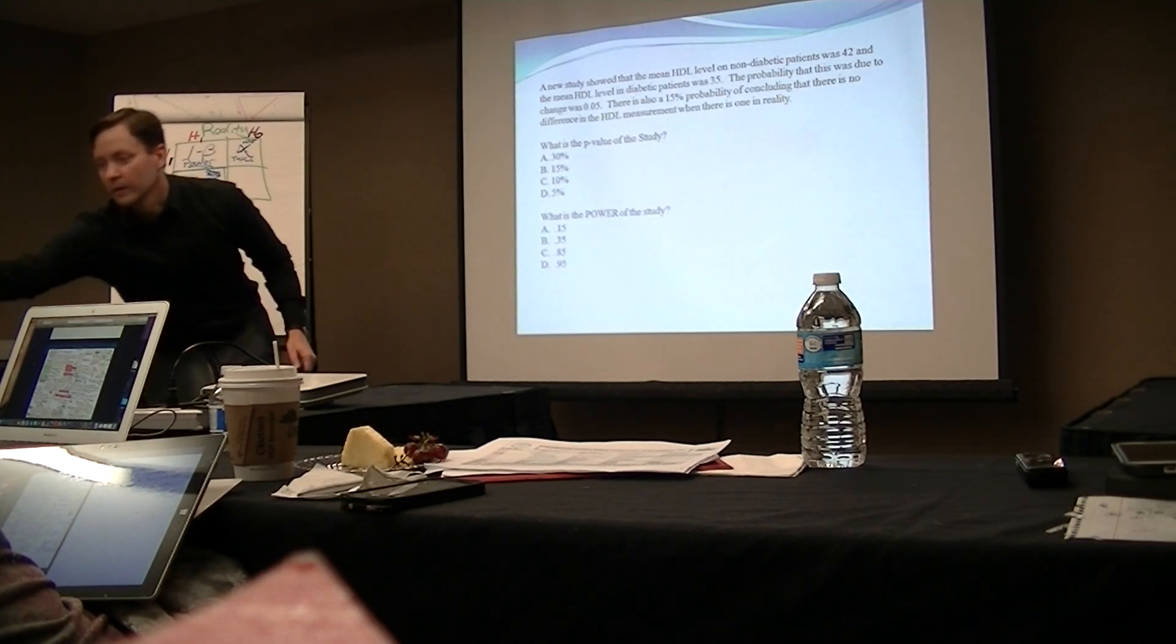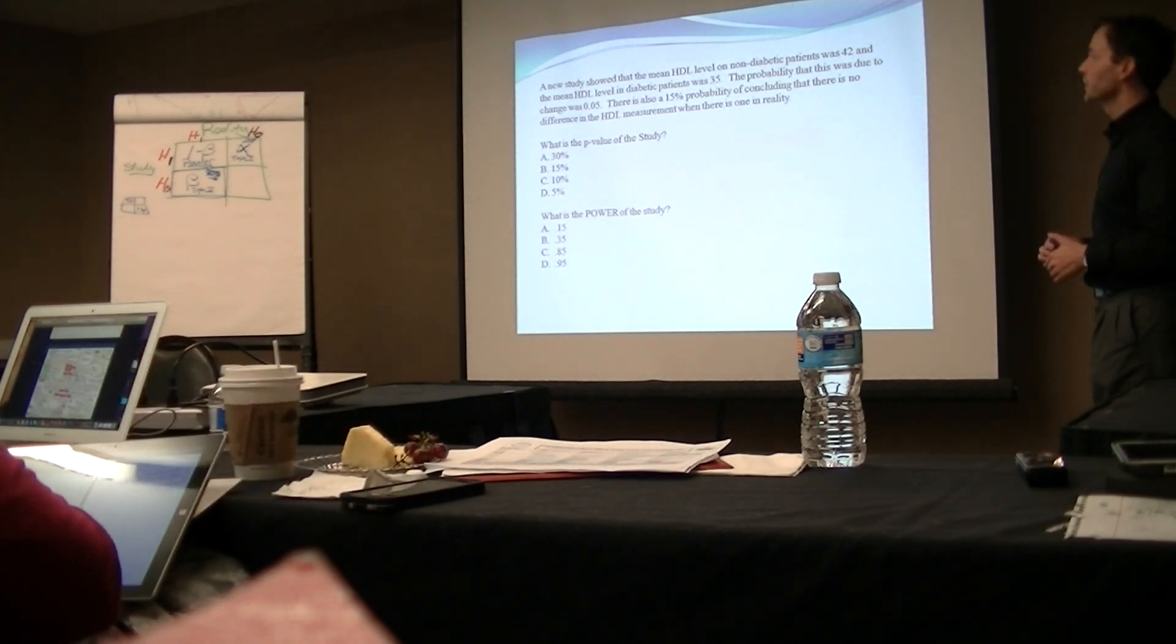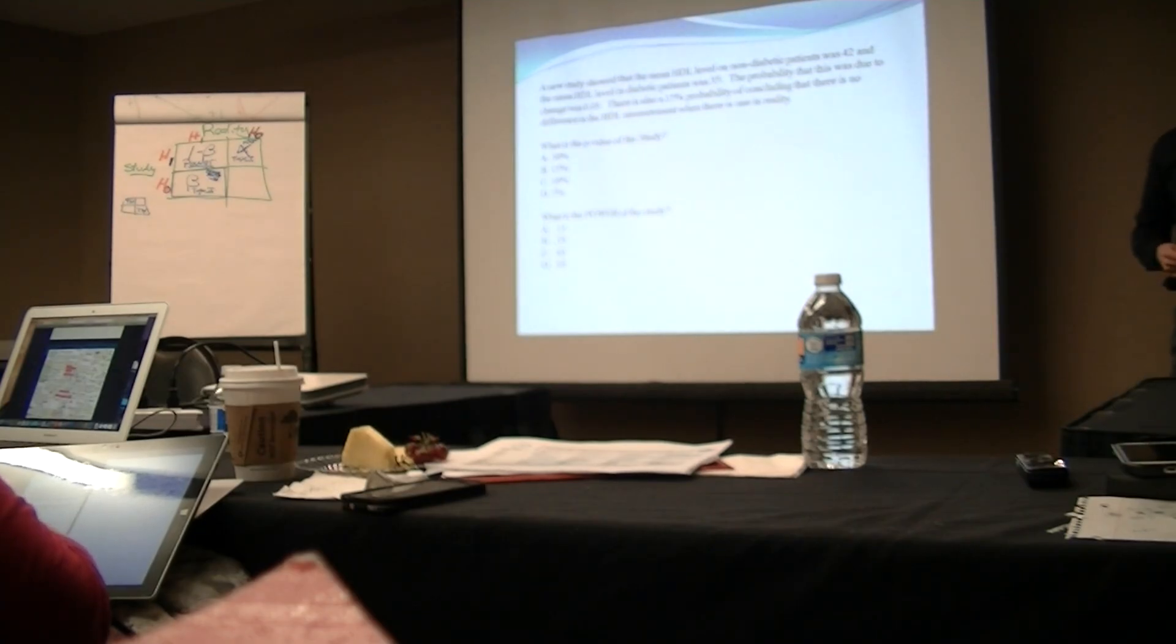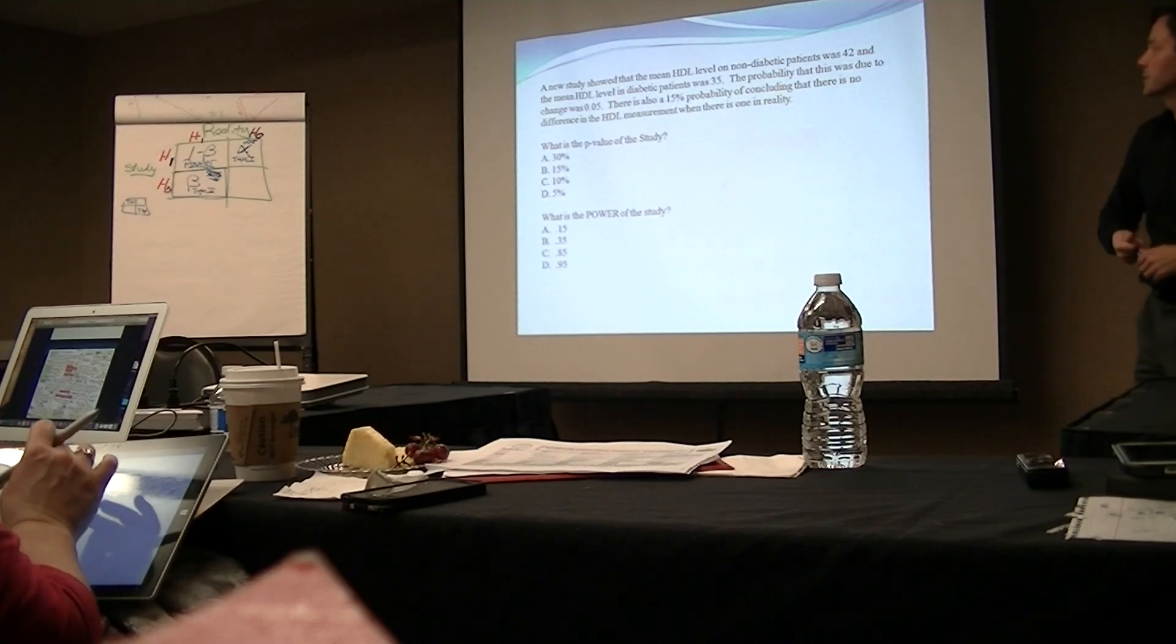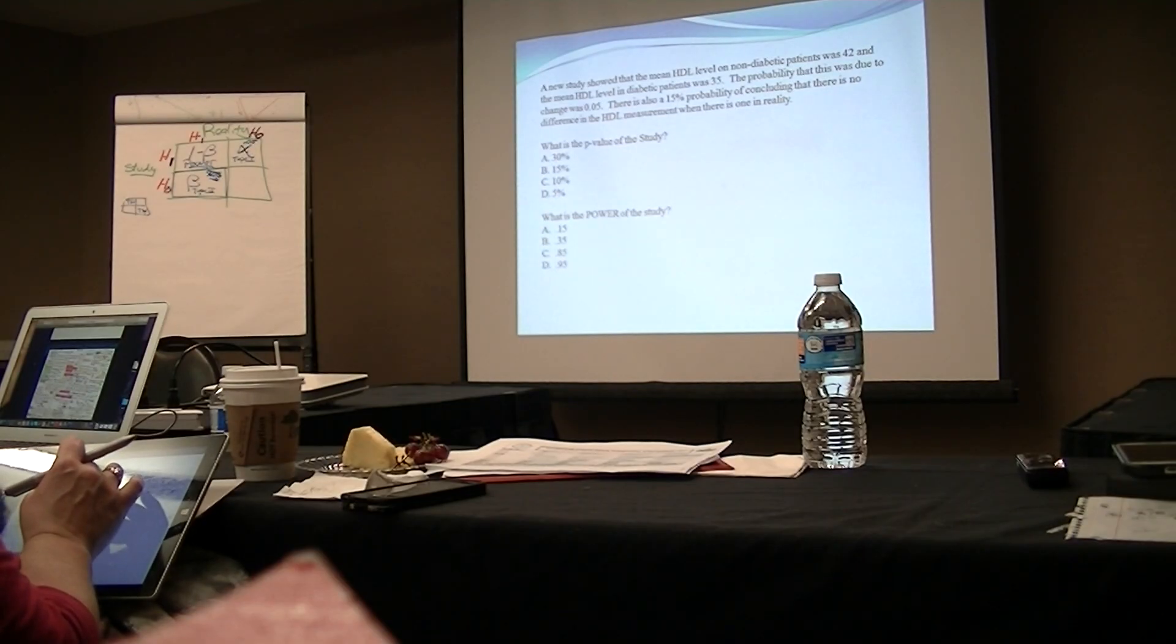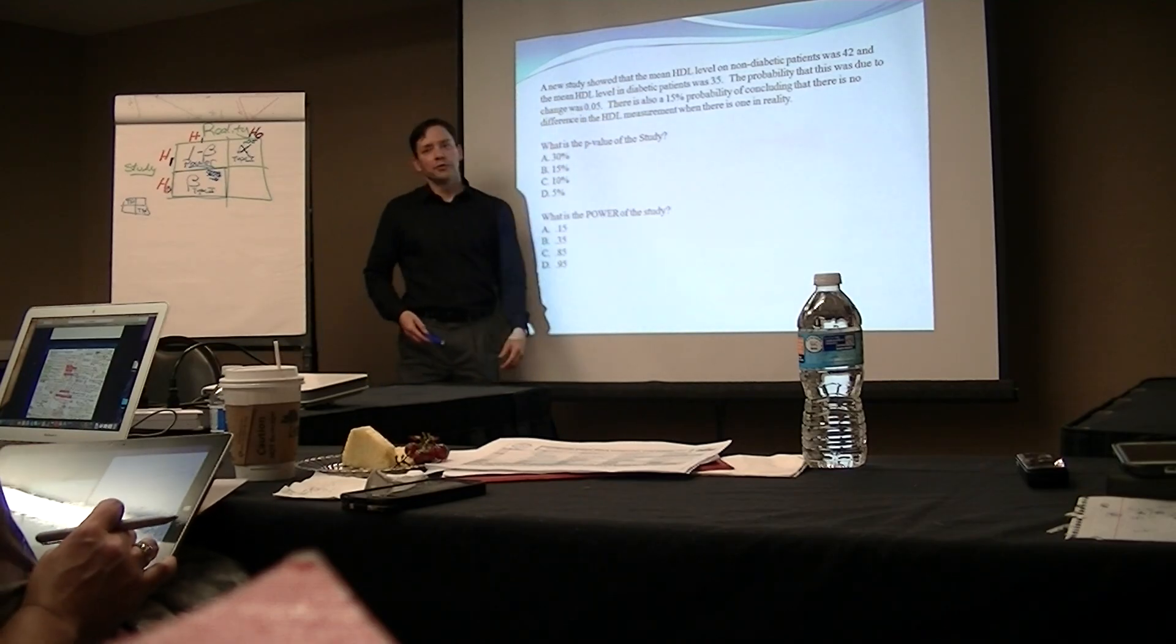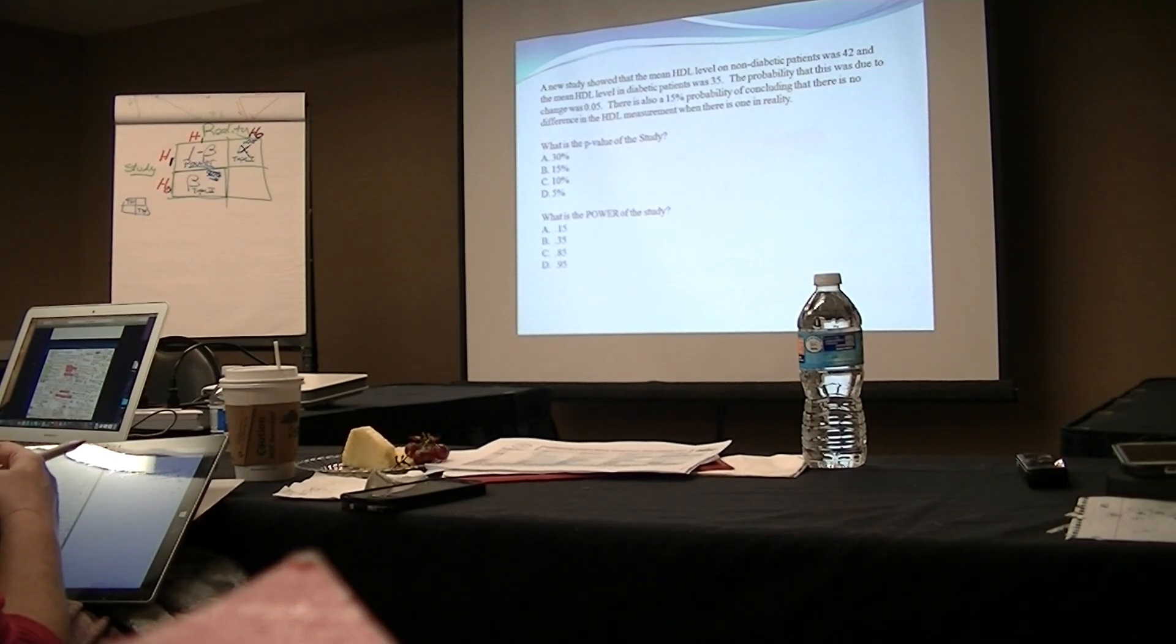All right, let's try it. A new study showed that the mean HDL level in non-diabetic patients was 42, and that the mean HDL level in diabetic patients was 35. The probability that this was due to chance was 0.05. What is the p-value of this study?